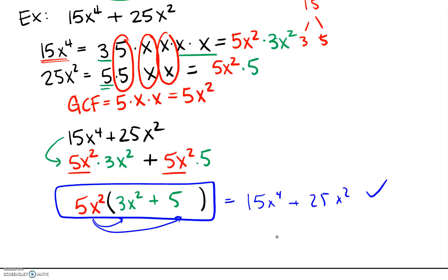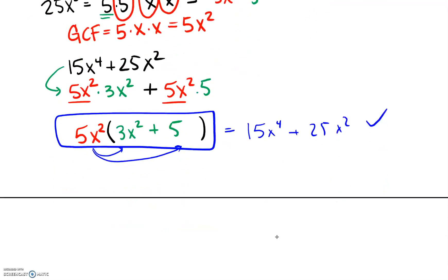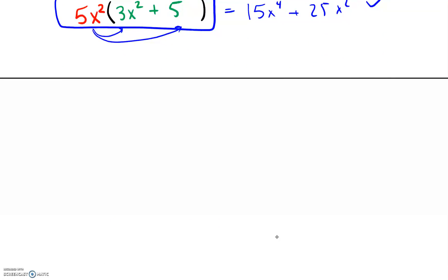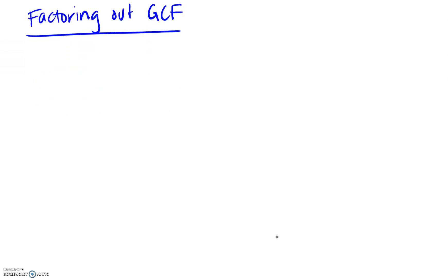That's a preview of factoring out a GCF. Let's do a couple more examples to practice. Here's one to try: 8a to the fifth plus 12a to the third minus 6a squared. Take a second to pause the video and figure out what the GCF is.